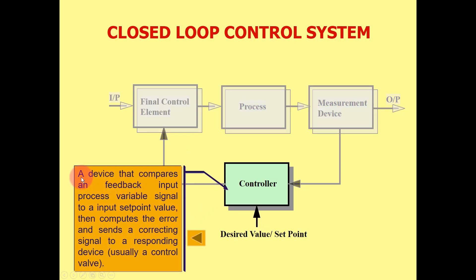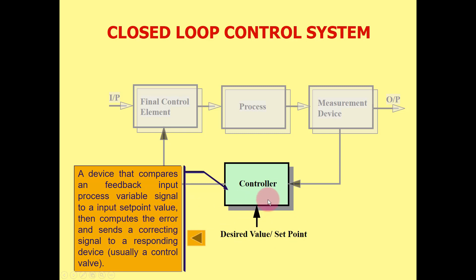A controller is a device that compares the feedback input process variable signal to an input set point value. The controller compares the process variable measured by the instrument in the field to the set point, then calculates the error and sends a correcting output signal to the final control element, usually a control valve.